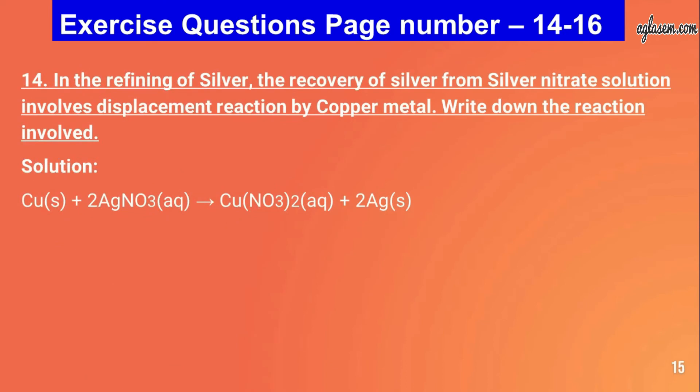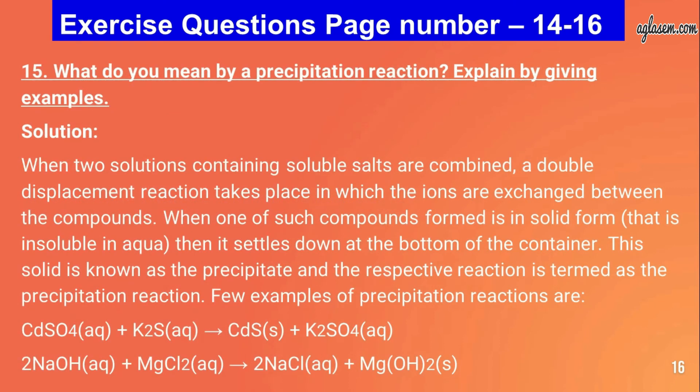Question number fourteen: in the refining of silver, recovery of silver from silver nitrate solution involves displacement by copper metal. Write the reaction involved. The solution is: Cu(s) + 2AgNO₃(aq) → Cu(NO₃)₂(aq) + 2Ag(s).